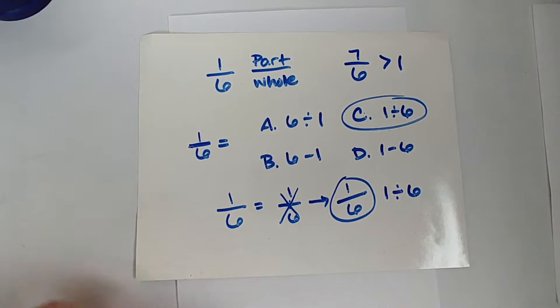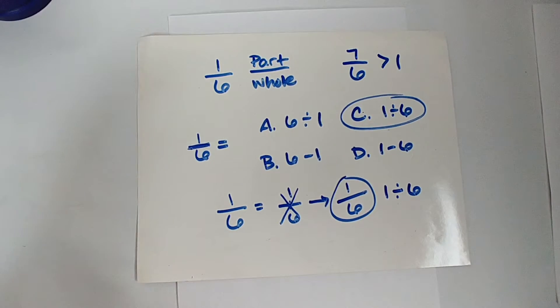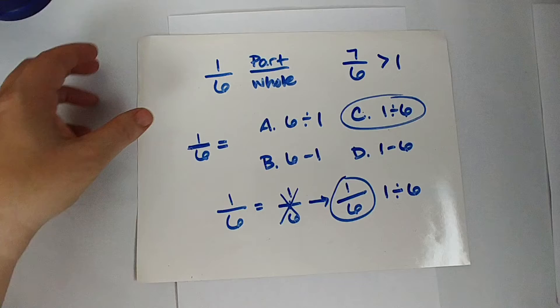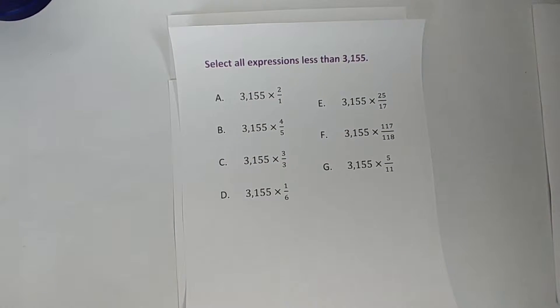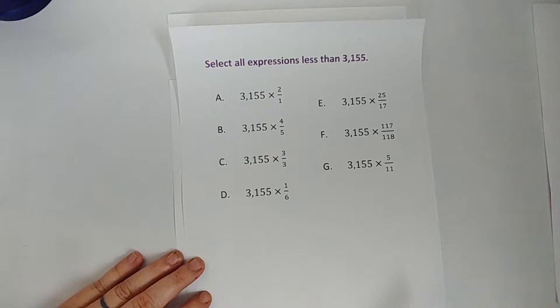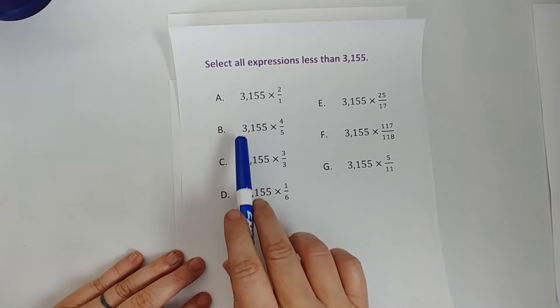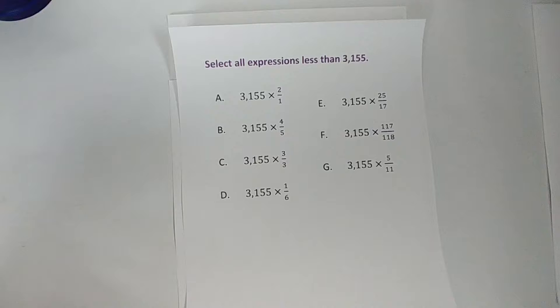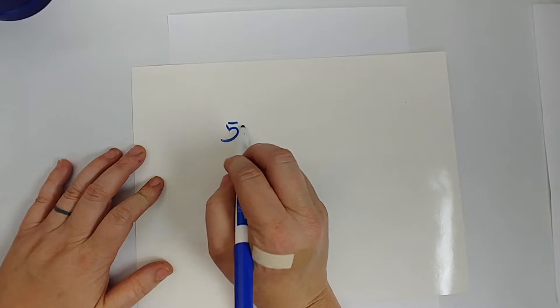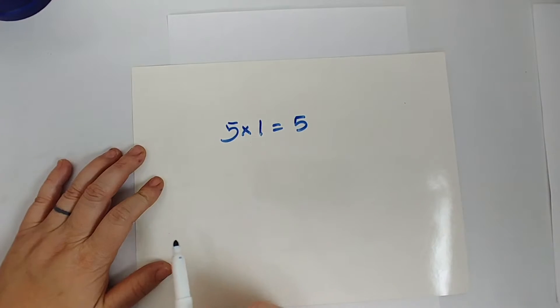We've talked about how to tell if a fraction is less than or greater than one, and that becomes very important because they'll start asking questions like 'select all expressions less than 3,155' where everything is 3,155 multiplied by something. You might think multiplication always makes numbers bigger, but that's exactly why they're asking — you don't always get larger. We've known this since learning the ones times tables: five times one is five; we multiplied but didn't get bigger.